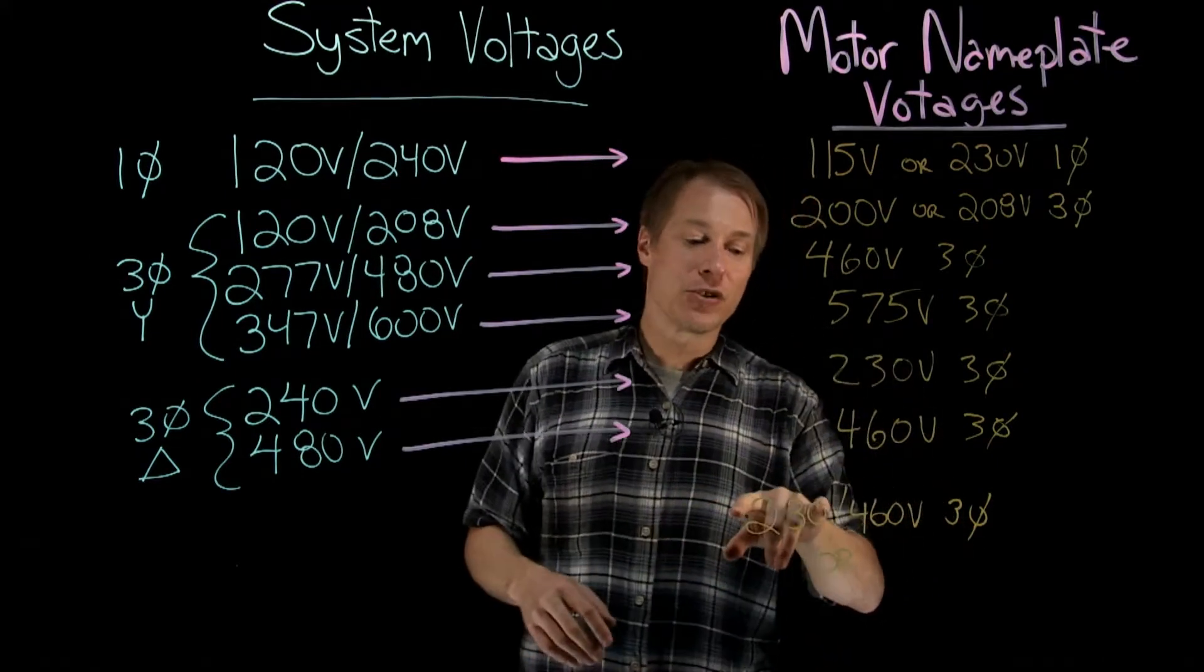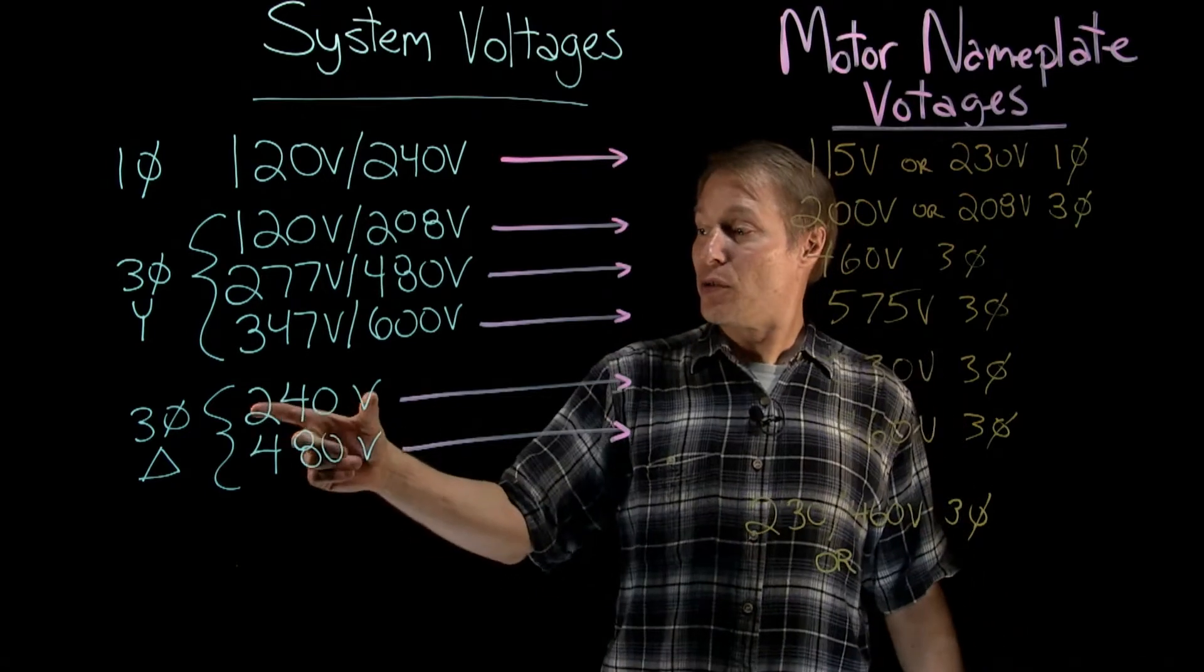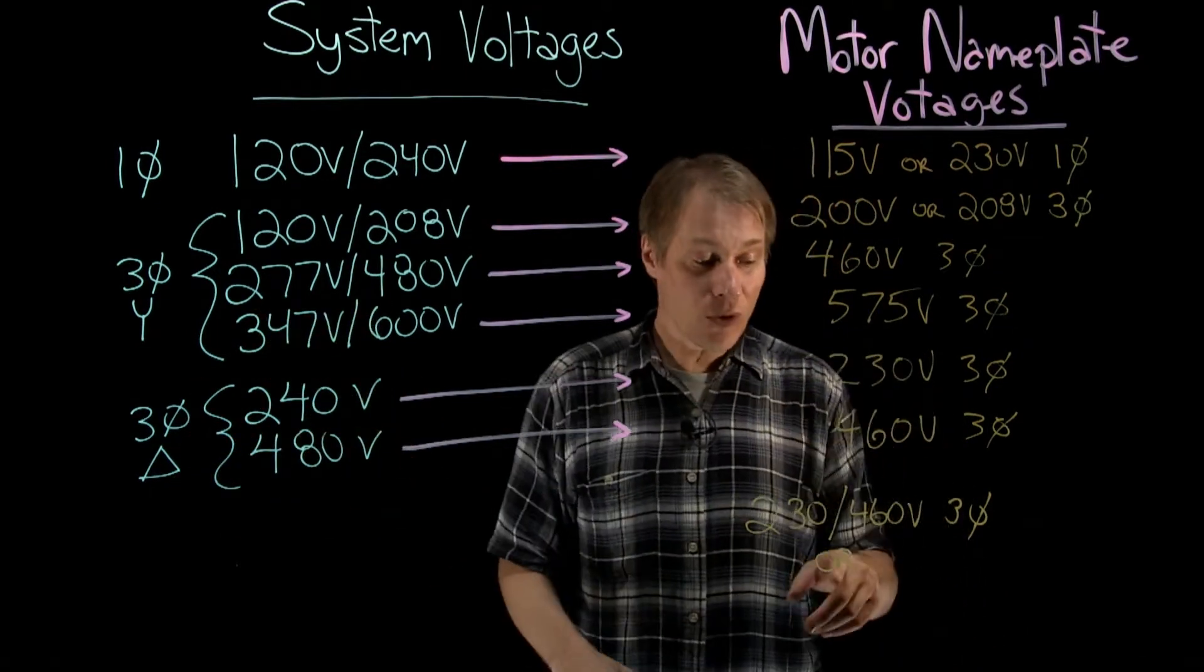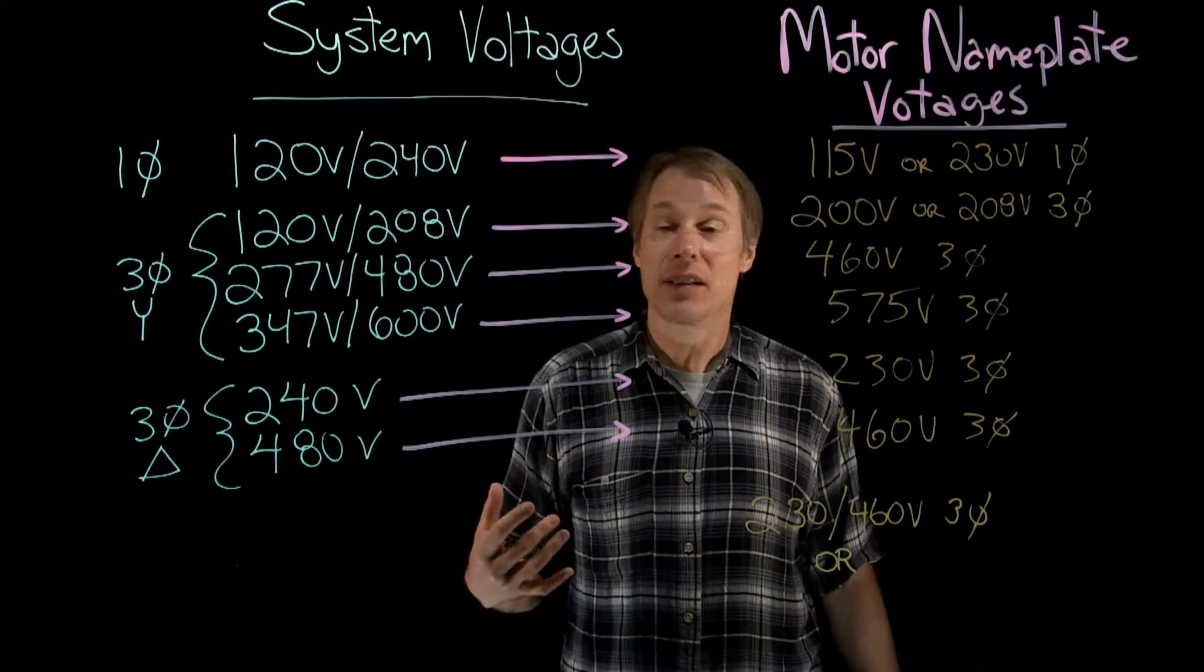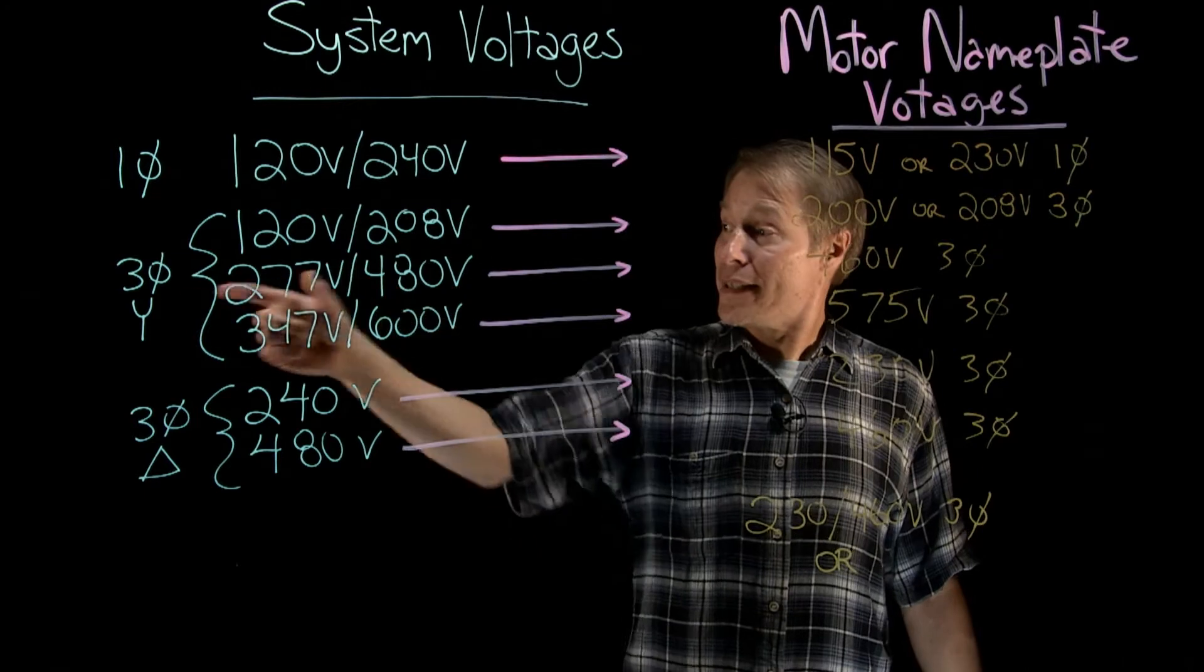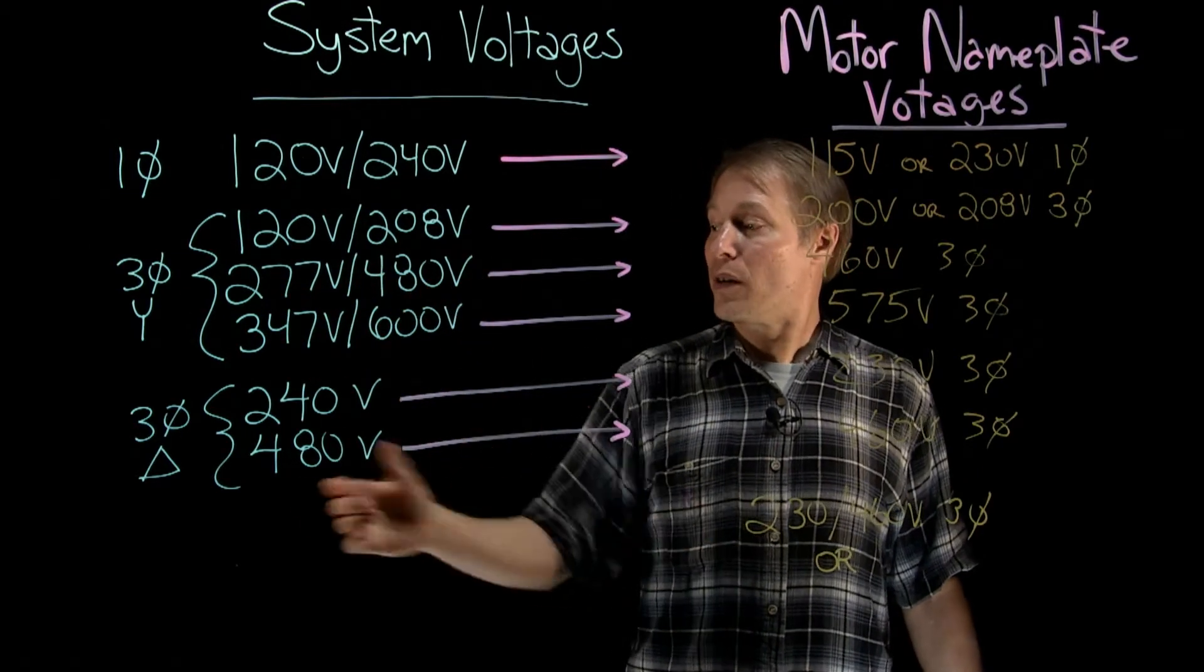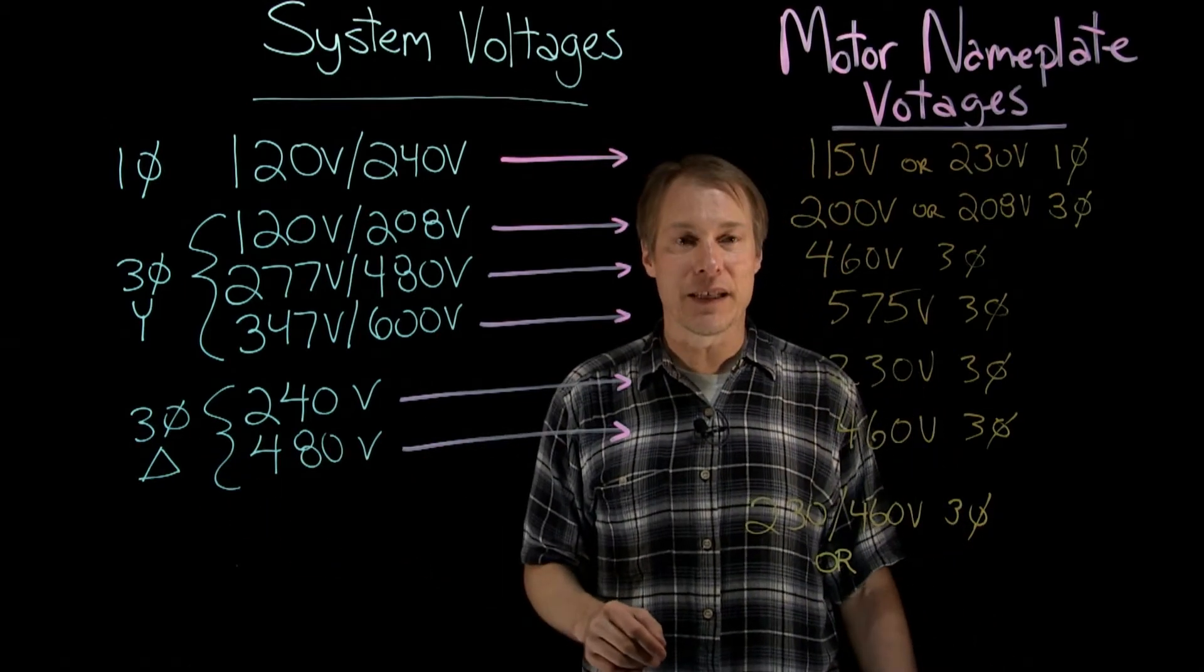So if you connect it as a 230V motor, you can see your option here would be then for the 240V three phase delta supply. If you connected it as a 460V motor, you have two options. You can connect it to the Y system, the 277V/480V system or the delta system which also supplies 480V three phase.